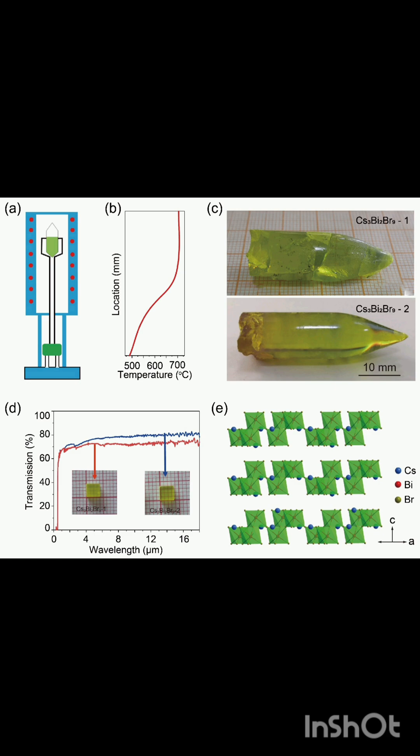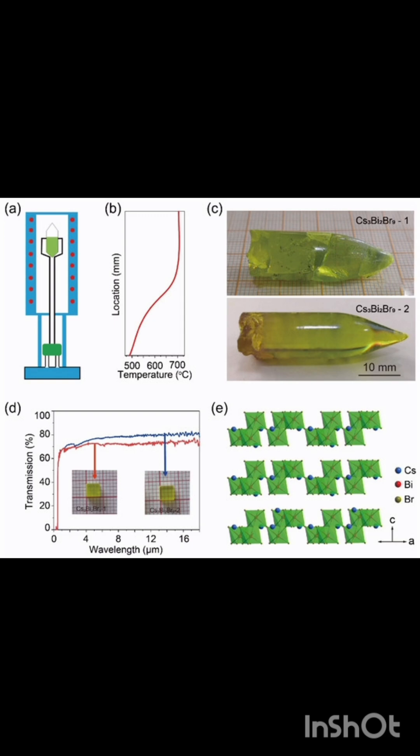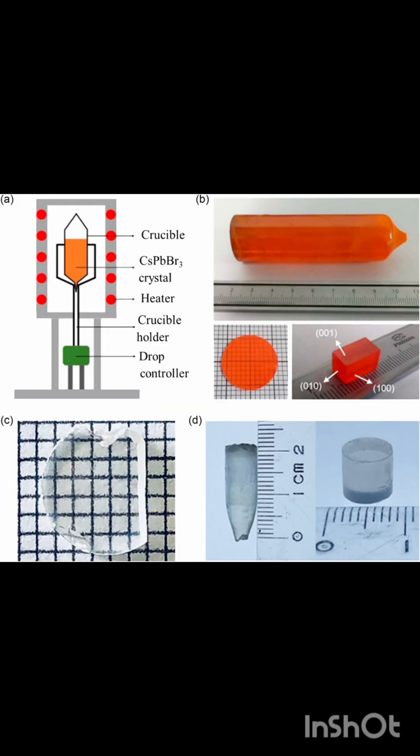The crucible is slowly moved through a furnace with a controlled temperature gradient, typically from a hot zone to a cooler zone. As the melt cools, it begins to solidify starting from the bottom and progressing along the length of the crucible.